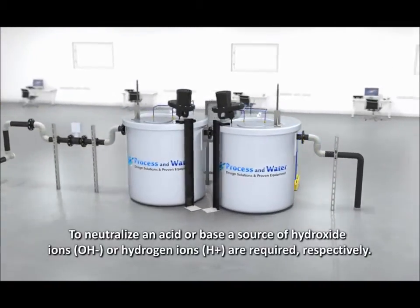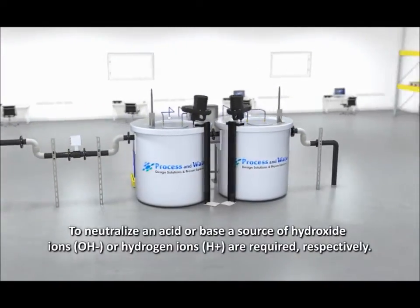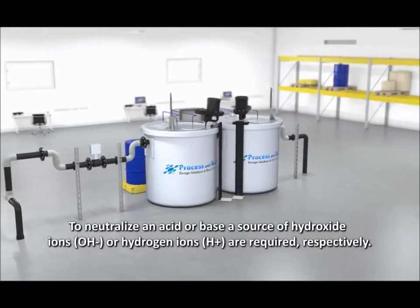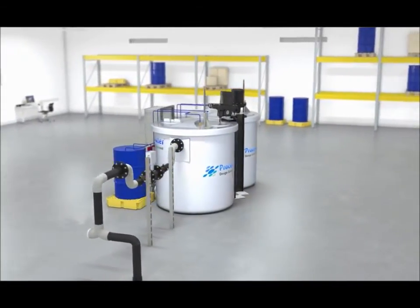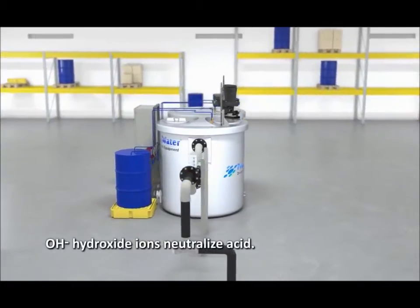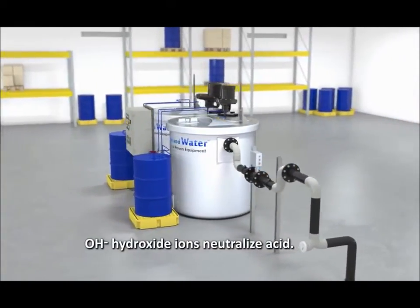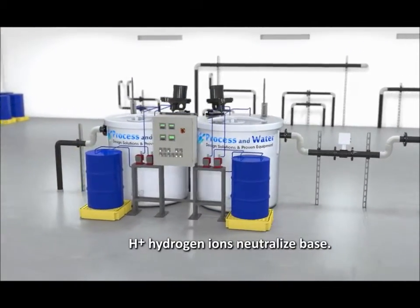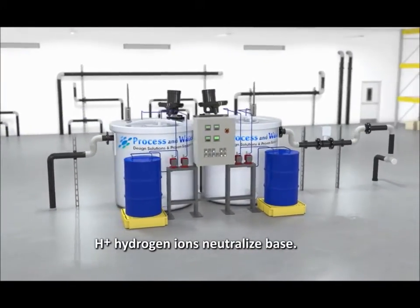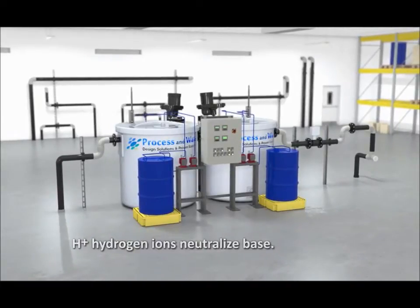To neutralize an acid or base, a source of hydroxide ions or hydrogen ions are required respectively. An acid must be neutralized with a base, which by definition is characterized by an excess of OH- ions. Likewise, a base must be neutralized with an acid, which by definition is characterized by an excess of H- ions.